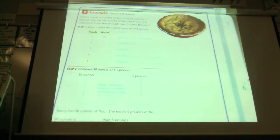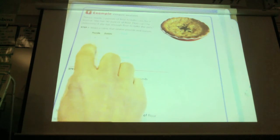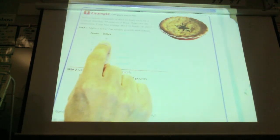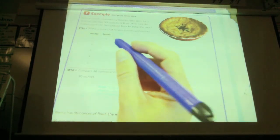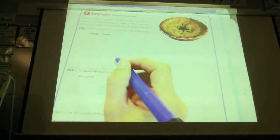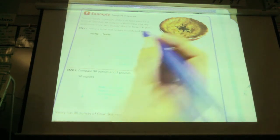Nancy needs five pounds of flour to bake pies for a festival. She has 90 ounces of flour. How can she determine if she has enough flour to bake the pies? Does this look kind of familiar? Kind of like yesterday. So if one pound is 16 ounces, how can we decide how much two pounds would equal? I heard some multiplication. I heard two times 16.